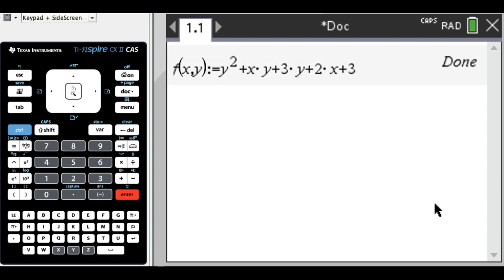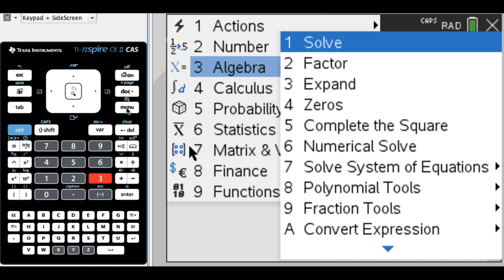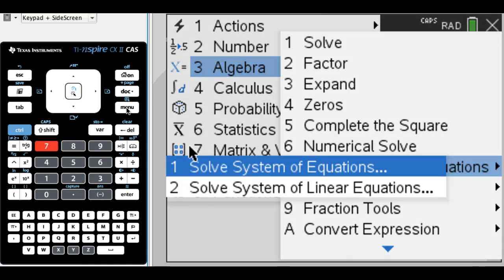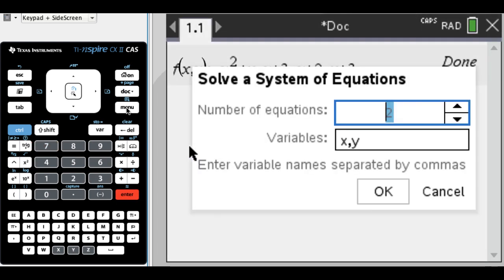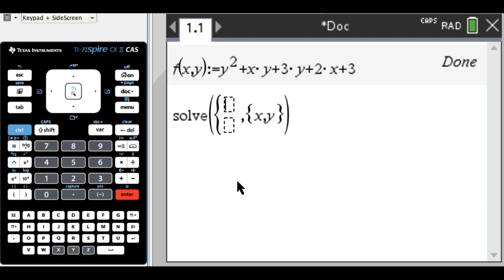So we want to be able to find the critical points. So what I'm going to do is just set up a system of equations. So I'm going to do menu, 3, and 7. So solve system of equations. It's going to be two equations and the variables are going to be x and y. So I'm going to press OK. And here I just want to put in, so I want the partial x to equal 0 and partial y to equal 0.